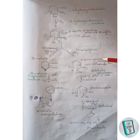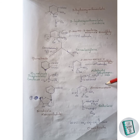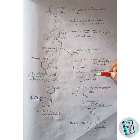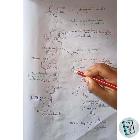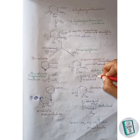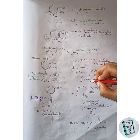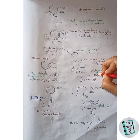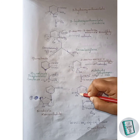2-aminomuconate semialdehyde can give rise to picolinate through another pathway. In this pathway, 2-aminomuconate semialdehyde in the presence of aldehyde dehydrogenase forms aminomuconate. Two hydrogens are removed and a water molecule is added. The hydrogen along with the hydrogen from water is released with NAD+ as NADH2. The remaining OH group of the water molecule attaches to this carbon to form an OH group.